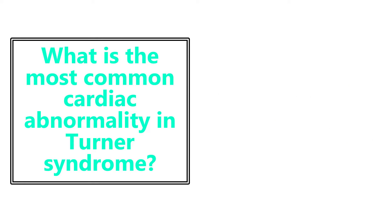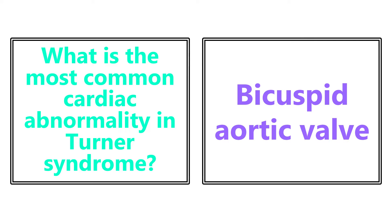What is the most common cardiac abnormality in Turner syndrome? Do not get trapped here — the answer is bicuspid aortic valve. Many resources associate Turner syndrome with coarctation of the aorta, but bicuspid aortic valve is actually more common, occurring in about 16% of patients versus coarctation at about 11%.